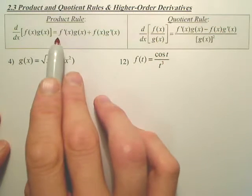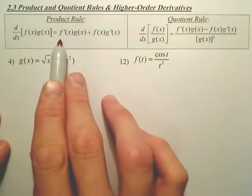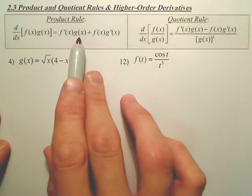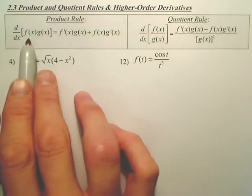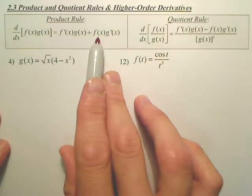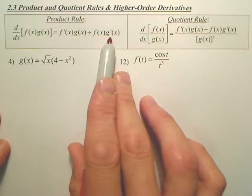And basically, product rule is right here. You derive the first function, leave the second function, first and second, plus the first function leave, derive the second.